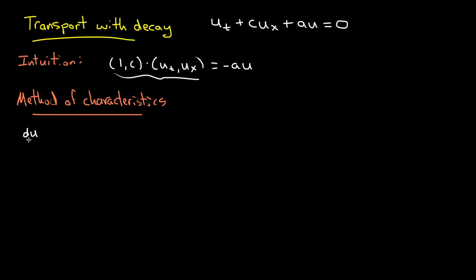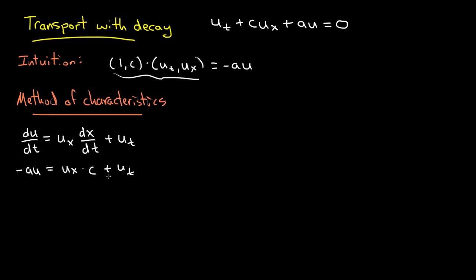You remember the general formula that describes the way that u changes along a characteristic line: du/dt equals ux times dx/dt plus ut. Now let's try to make this look like our transport with decay. Just like we did with the transport equation, we set dx/dt equal to c. But now, before du/dt was 0, but now I've got this extra au term, so I'll make du/dt equal to minus au. That will be my characteristic equations: dx/dt equals c, and du/dt equals minus au.